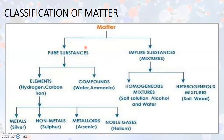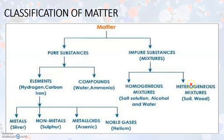All the substances that are present around us, including both living things and non-living things, is called matter. All these substances are classified into two broad categories: pure substances and impure substances. Pure substances are again classified as elements and compounds, while impure substances, otherwise mixtures, are classified as homogeneous mixtures and heterogeneous mixtures.